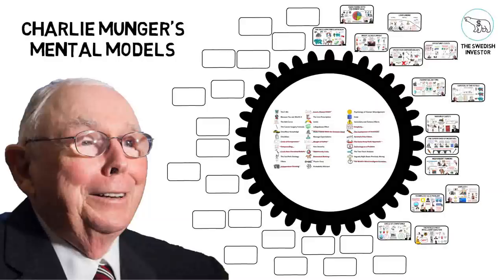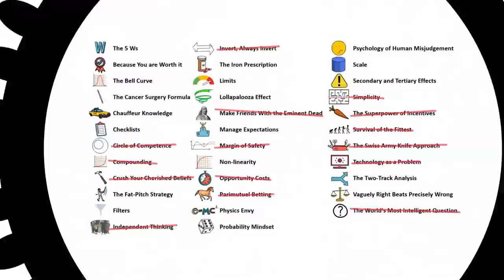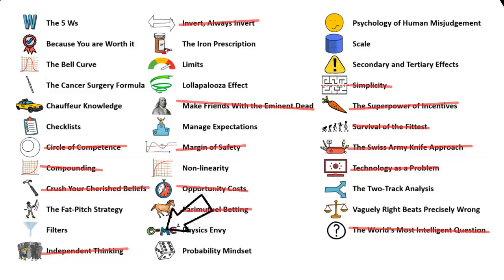We're now at the 4th part in the series where we take a look at the most important mental models of the billionaire investor Charlie Munger. In the last part, we learned that to avoid getting hurt by people with the wrong incentives, you must learn to use independent thinking. You can cut through the complexities of our world by always focusing on the most fundamental ideas and be certain that you get these right.